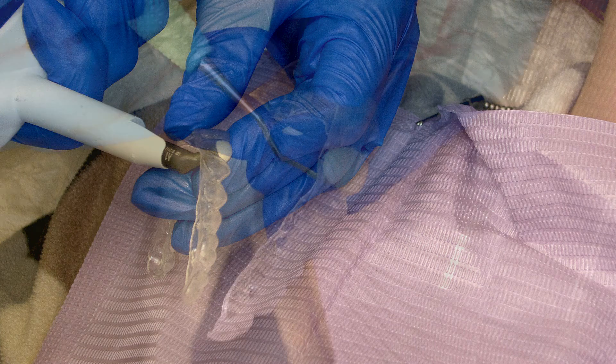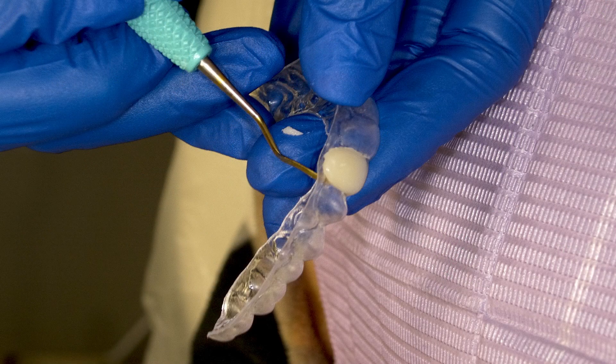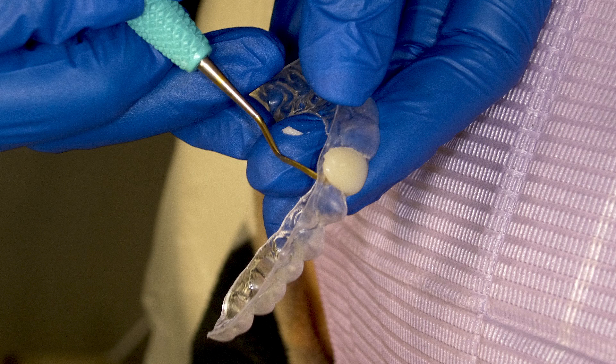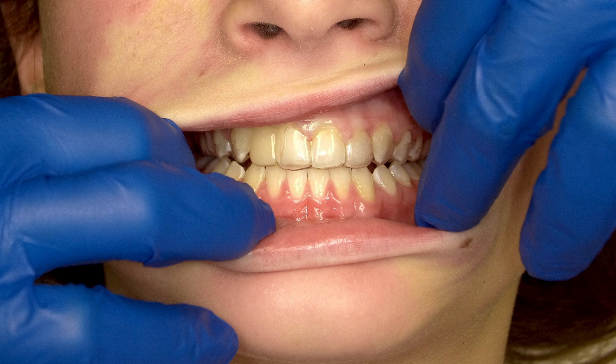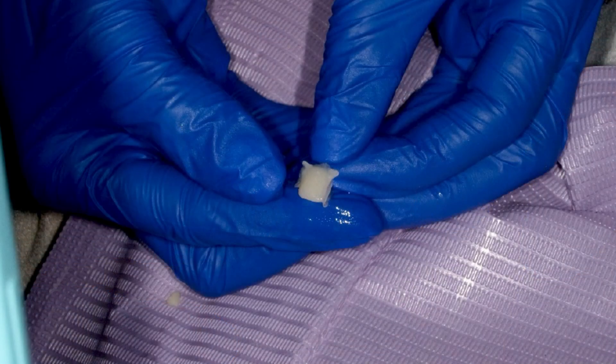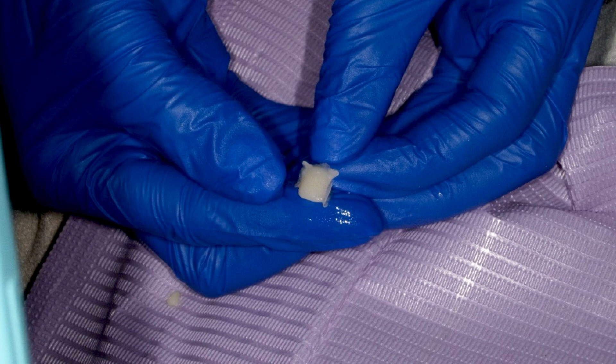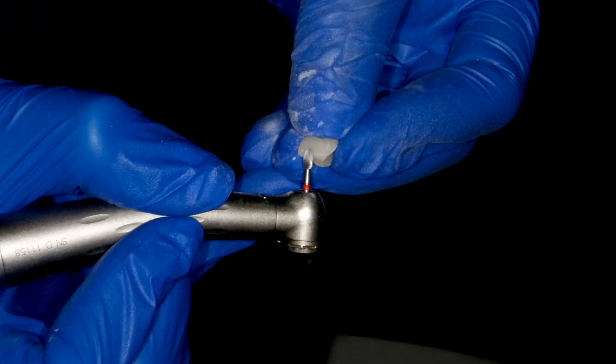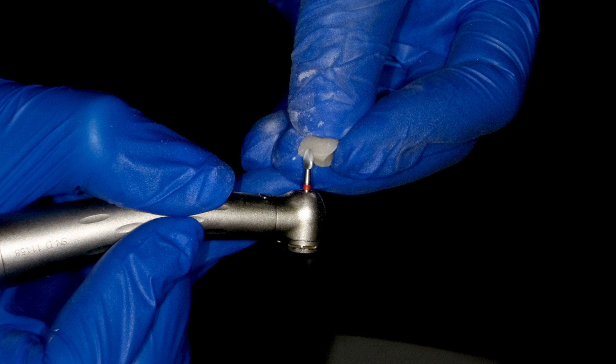We'll go ahead and repeat that process for the edentulous space as well, placing our packable composite into the Essex retainer, seating the Essex retainer with good firm pressure into that space, verifying that it fits adequately on the patient, trimming all excess material away, and then moving towards a bonding protocol to adhere the pontic tooth into position.